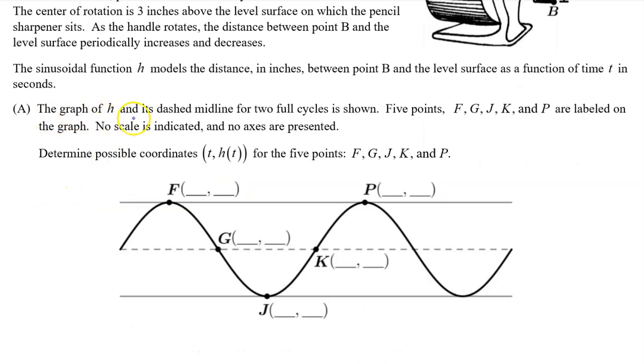Part A. The graph of H and its dashed midline for two full cycles is shown. Five points F, G, J, K, and P are labeled on the graph. No scale is indicated and no axes are presented. Determine possible coordinates t, H of t for the five points F, G, J, K, and P.